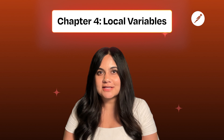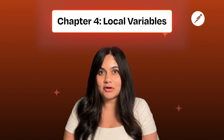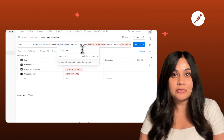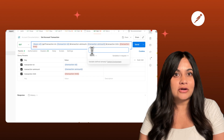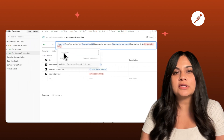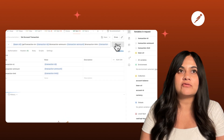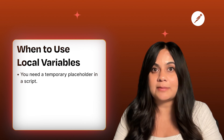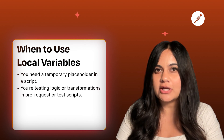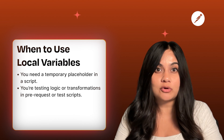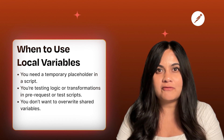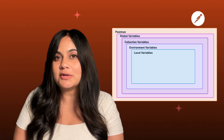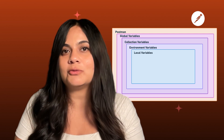Speaking of dynamic, this brings us to our fourth and final scope: local variables. Local variables exist only during the execution of a single request — they are temporary, not saved, not shared, and not persistent. Use them for short-lived data during scripts, such as extracting response values or testing calculations. Use local variables when you need a temporary placeholder in a script, when testing logic or transformations in pre-request or post-request scripts, when you don't want to override shared values, or when chaining requests dynamically. They're great for experimentation and quick calculations without affecting any other variable scopes.